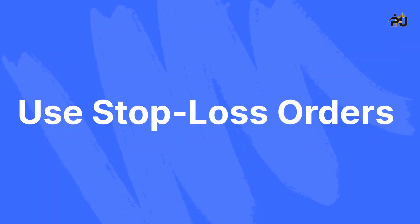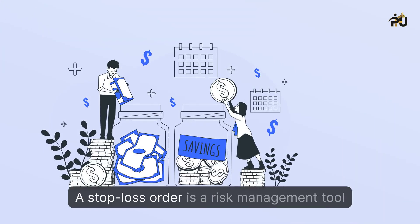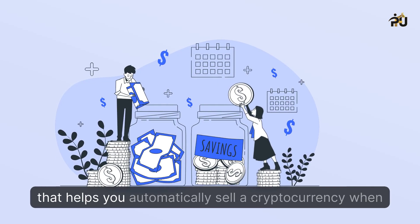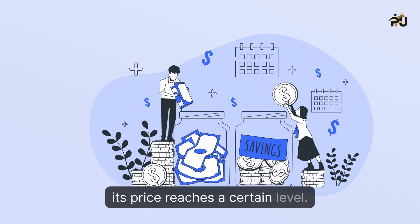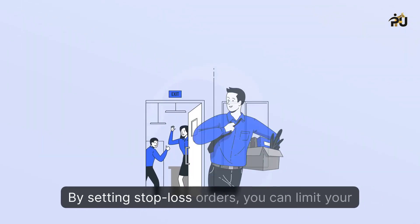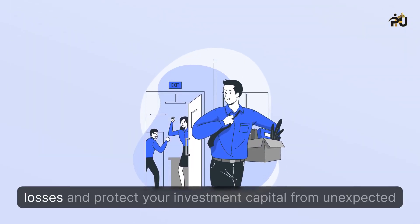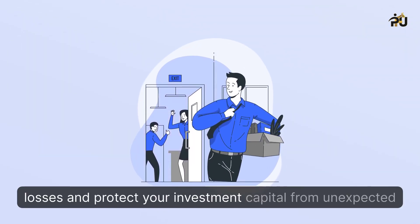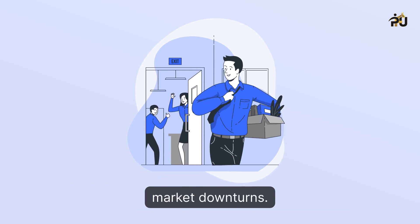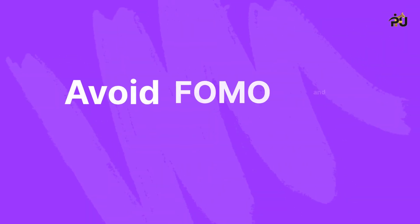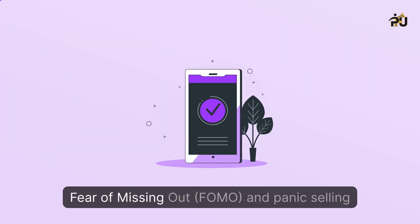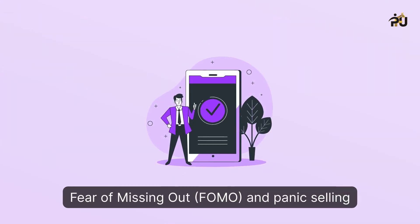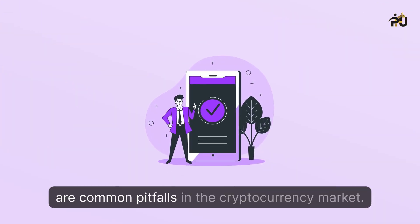Use stop-loss orders. A stop-loss order is a risk management tool that helps you automatically sell a cryptocurrency when its price reaches a certain level. By setting stop-loss orders, you can limit your losses and protect your investment capital from unexpected market downturns.